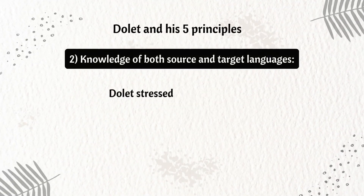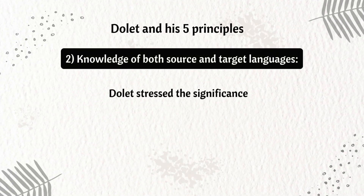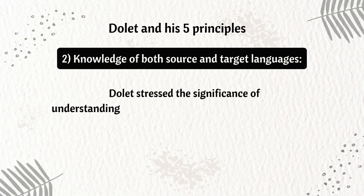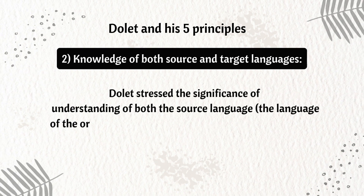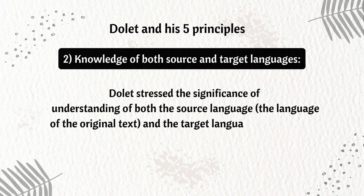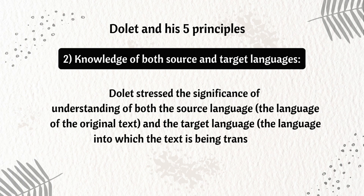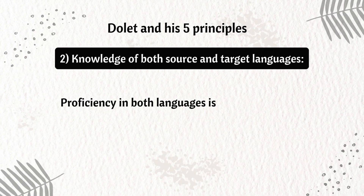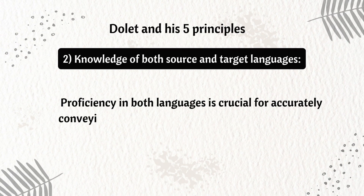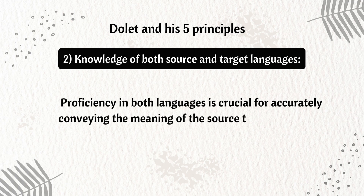Principle 2: Knowledge of Both Source and Target Languages. Dolet stressed the significance of having a thorough understanding of both the source language — the language of the original text — and the target language — the language into which the text is being translated. Proficiency in both languages is crucial for accurately conveying the meaning of the source text in the target language.